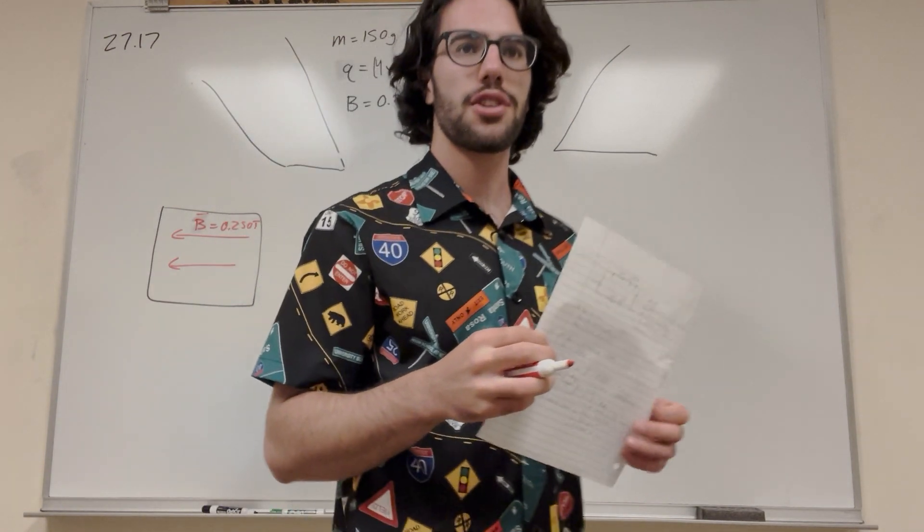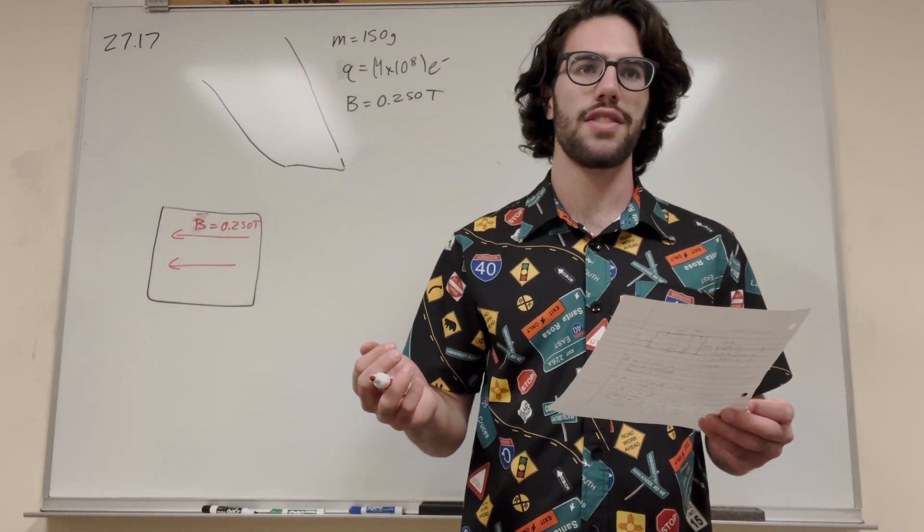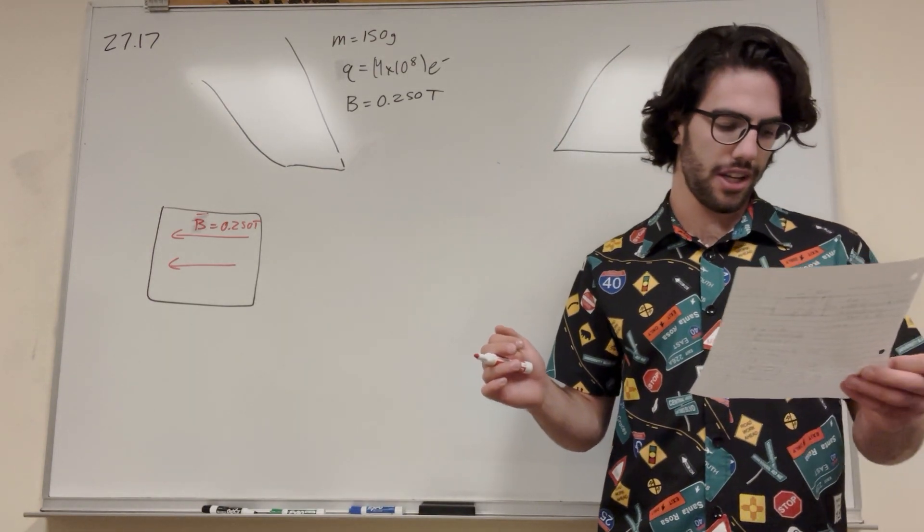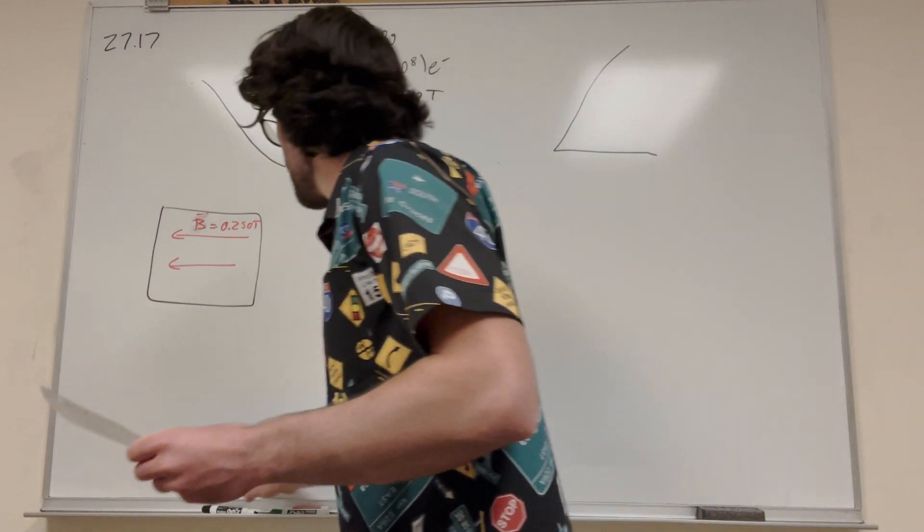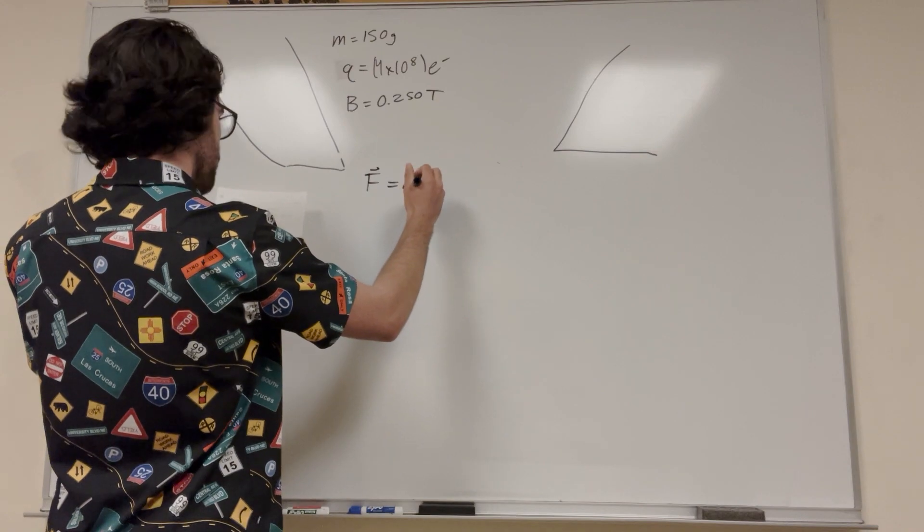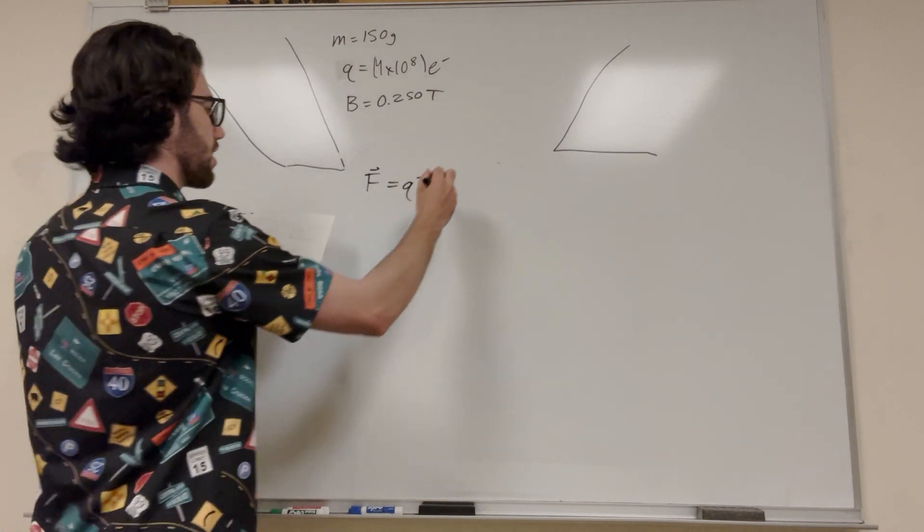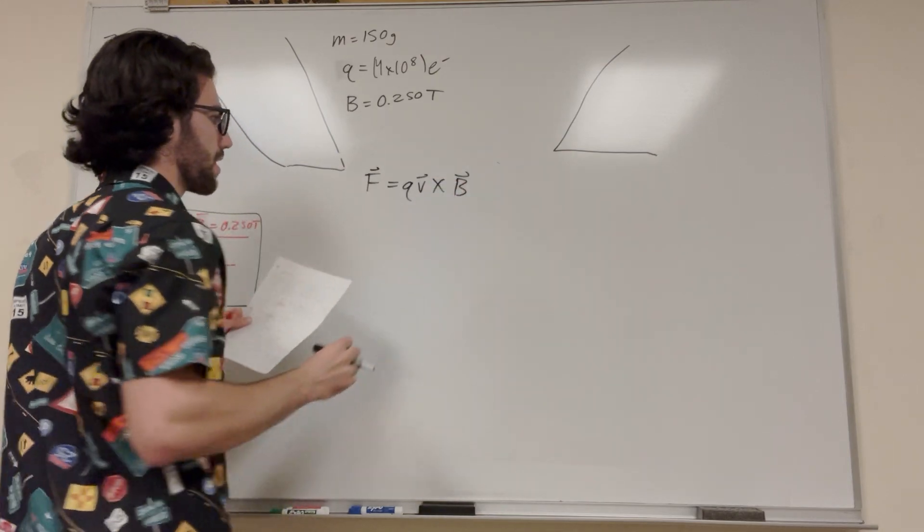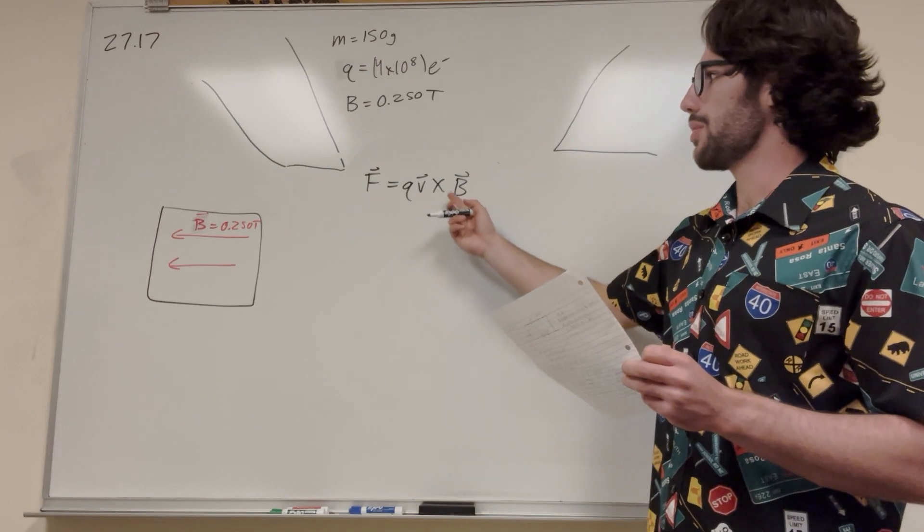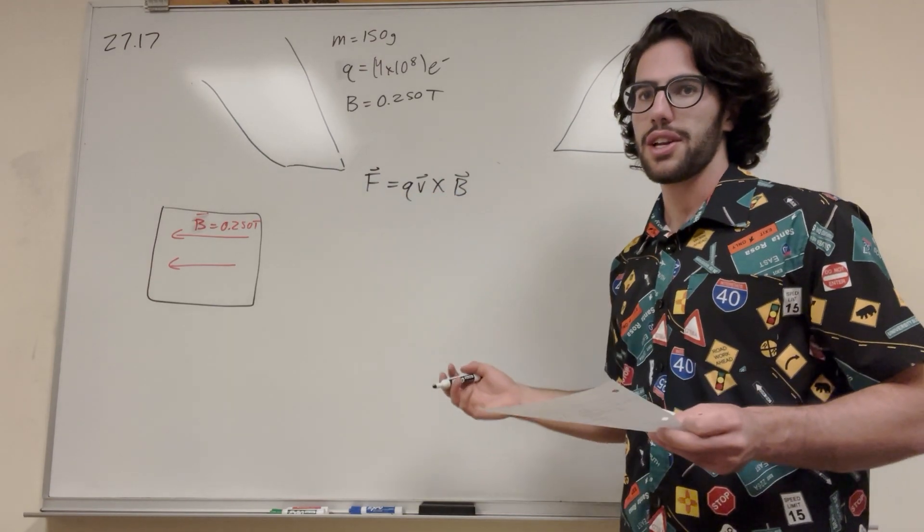Okay, so what are we trying to find? We're trying to find the force. So if we're trying to find the force, we're going to use the formula. Our formula for this is going to be force is equal to Q velocity crossed with our magnetic field. So we have B and we have Q, and we're trying to find force. So let's go ahead and do this. So let's start with V.